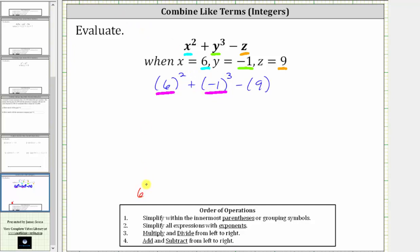Six squared is equal to two factors of six, or six times six, which is 36, and the cube of negative one is equal to three factors of negative one, which is equal to negative one.